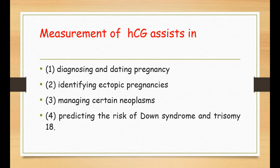HCG can also be used as a predictor of risk for Down syndrome and trisomy 18. During pregnancy, certain elevations or decreases in the level of HCG can provide a clue to chromosomal abnormality.